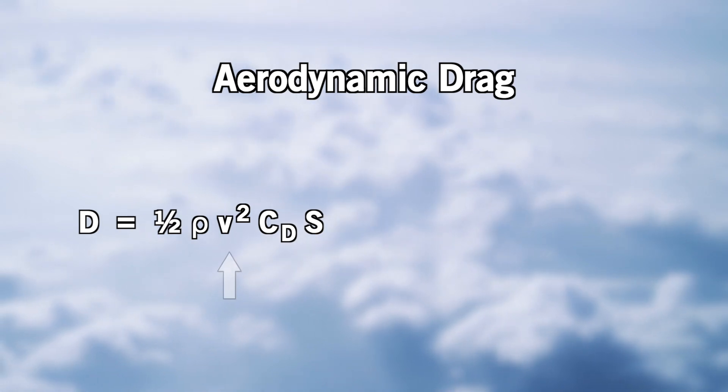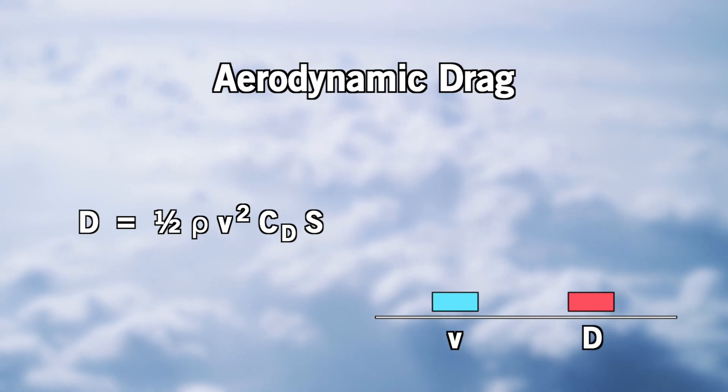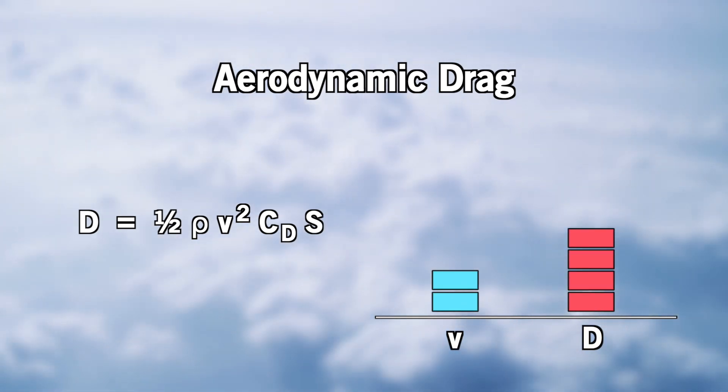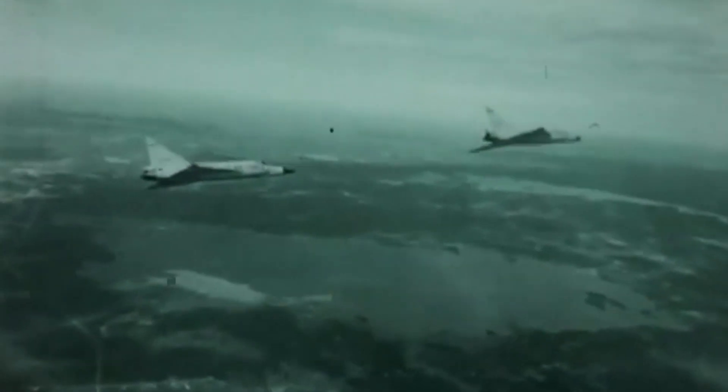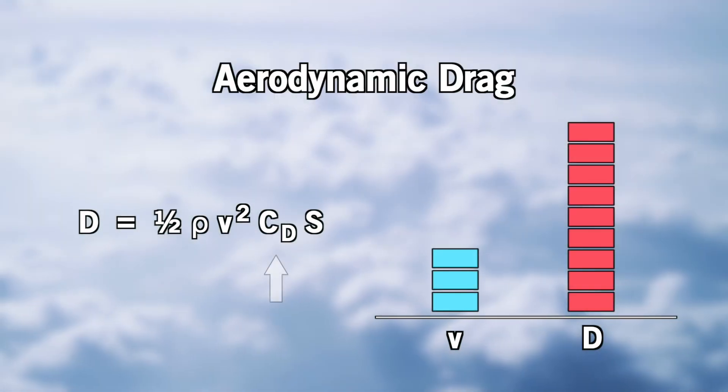If you look closely, drag is proportional to the square of the speed. This means that if we double the airspeed, drag increases by 4, and if we triple it, then drag increases by 9. However, this was not the reason why the F-102 was unable to break the sound barrier. The problem was rather the drag coefficient.